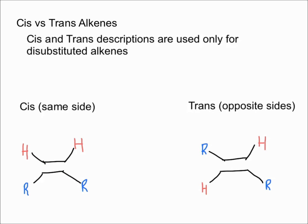To summarize simply: cis means the H's are on the same side, and trans means the H's or R groups are diagonal to each other. Remember that mono-, tri-, and tetrasubstituted alkenes cannot show cis or trans isomerism — only disubstituted alkenes can be cis or trans.